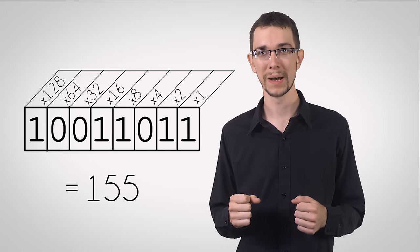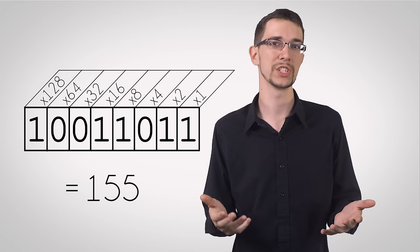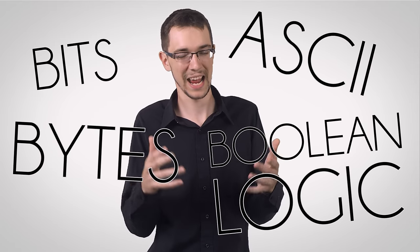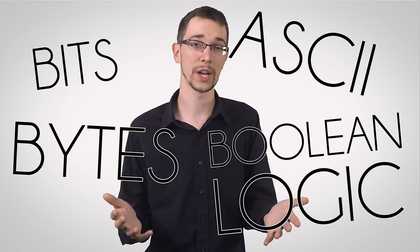And that's how you count in binary. It's actually really simple. It's just multiplication and addition. Now, it gets a lot more complicated from here, with bits and bytes and Boolean logic and ASCII, and the list just goes on and on. So, let's return to base systems.